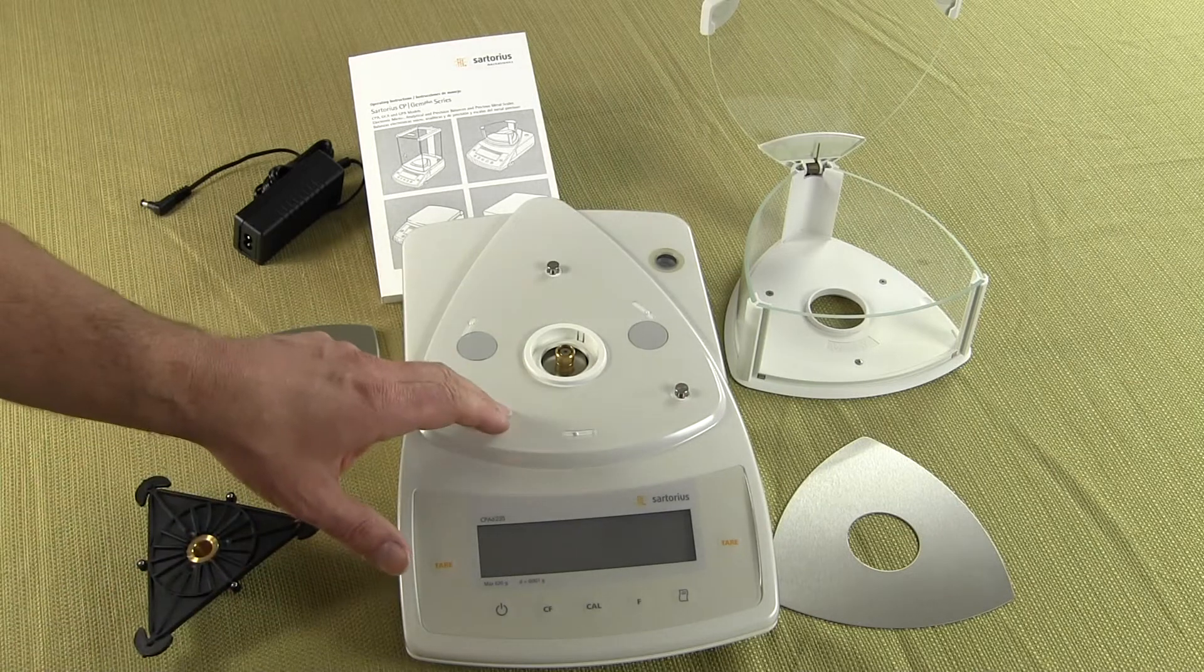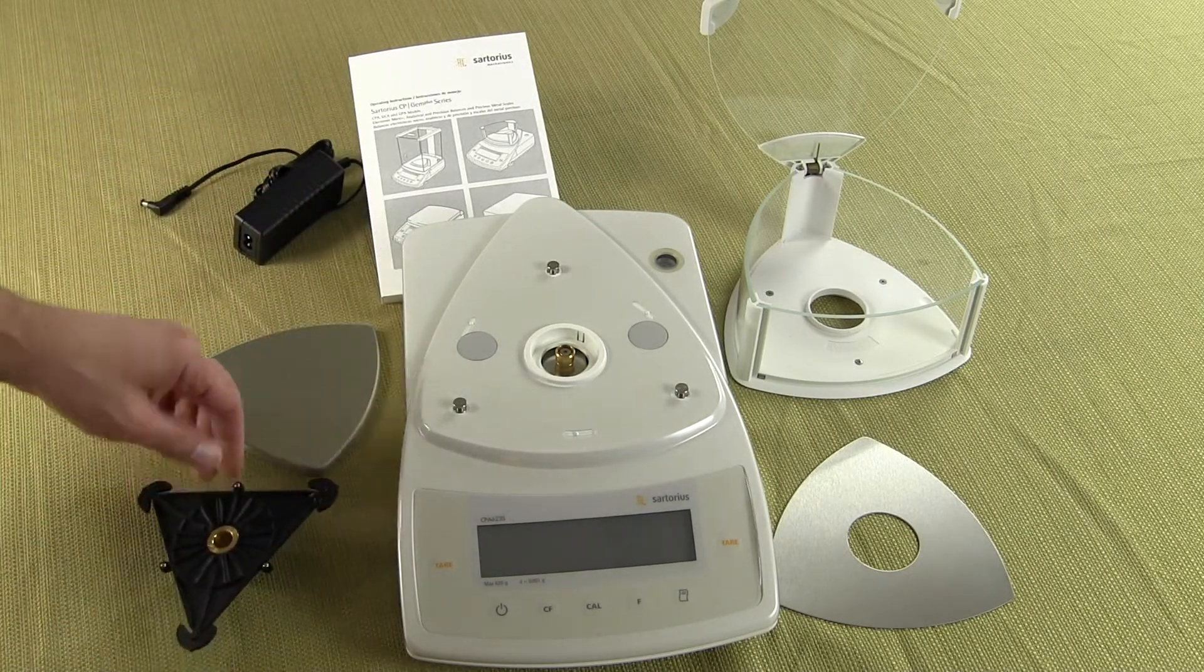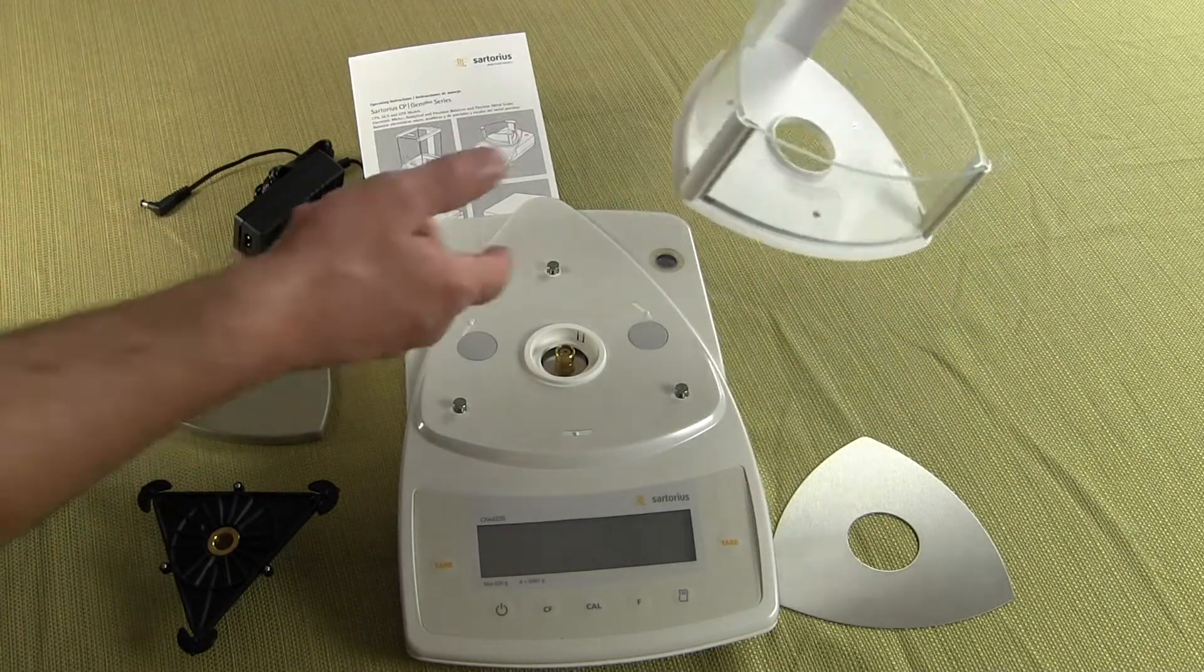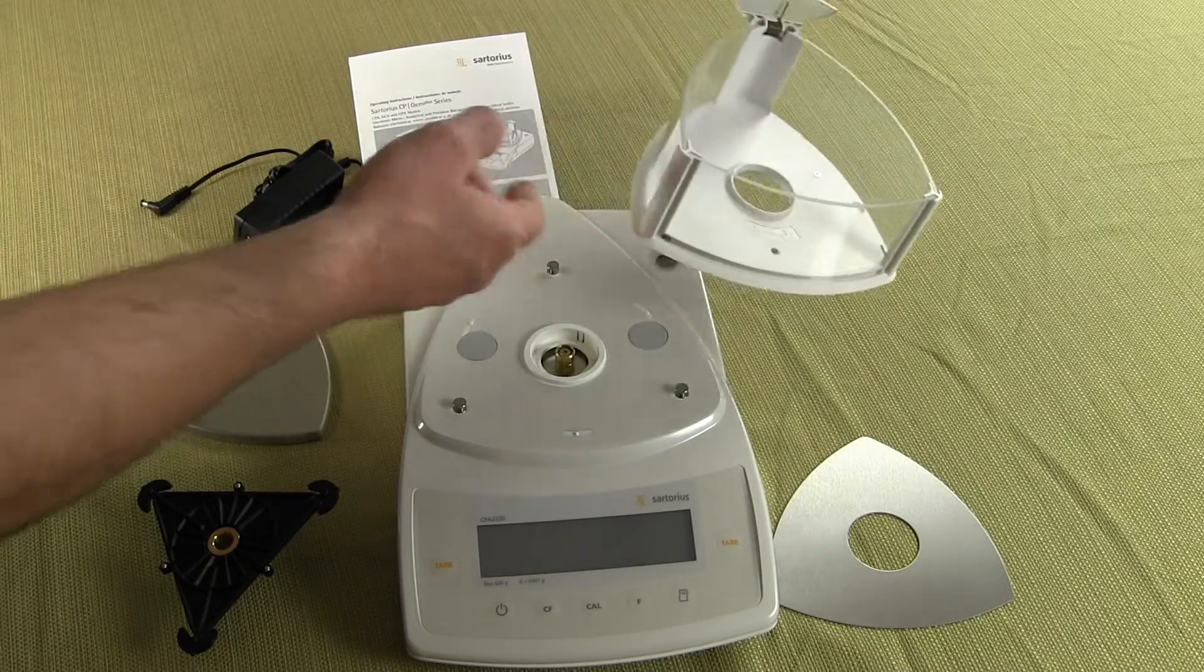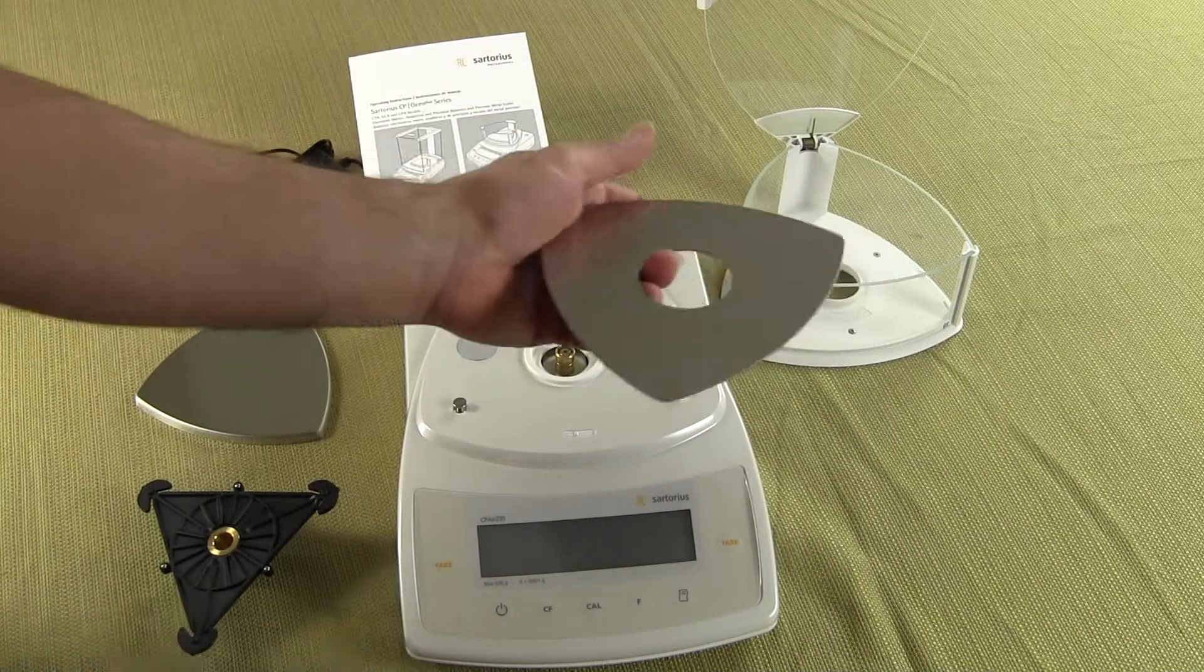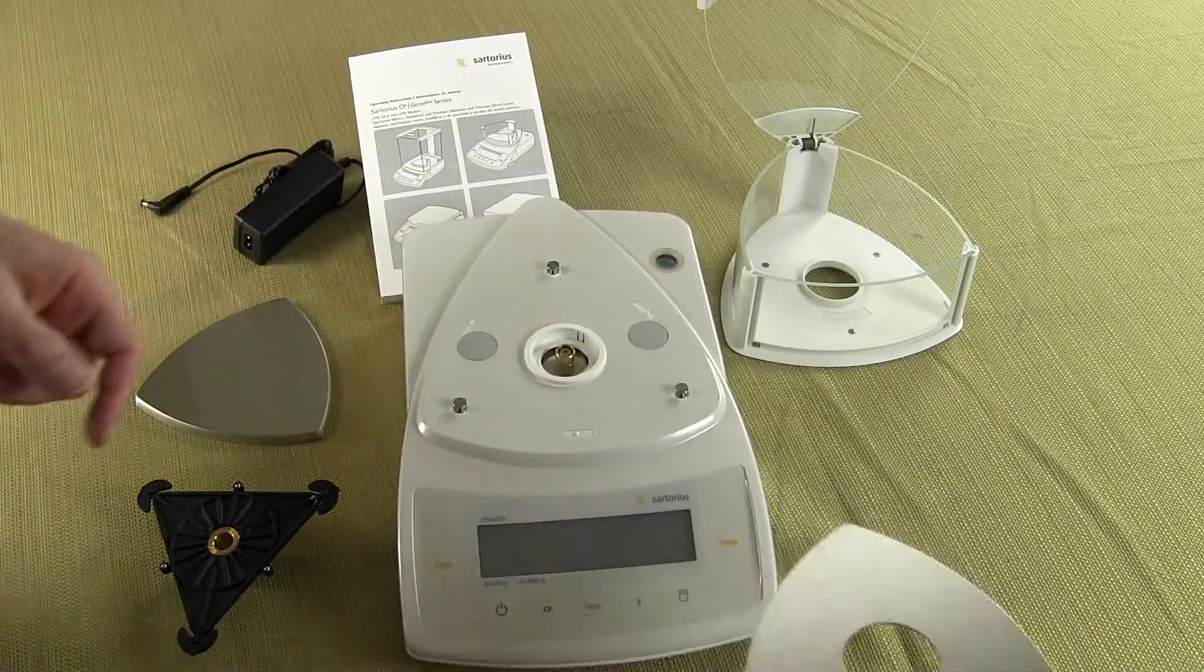So we have the balance itself, we have the support pan, we have the pan itself, and then this here is our draft shield and we'll show you how to install that. And then this is a stainless steel plate that goes on the bottom of the balance in the draft shield for easy cleanup.